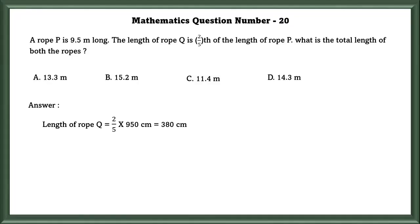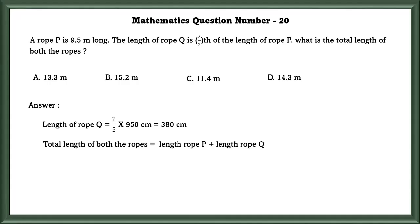In order to find the rope Q, 2 by 5 into 950 centimeters is equal to 380 centimeters. So, the length of both the ropes is equal to 13.3 meters.